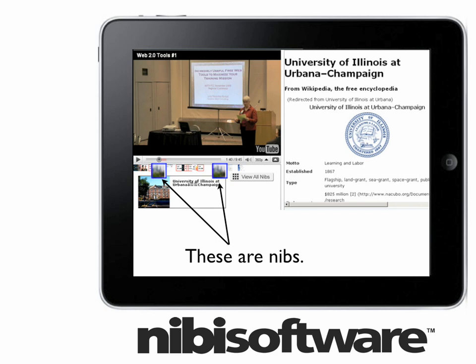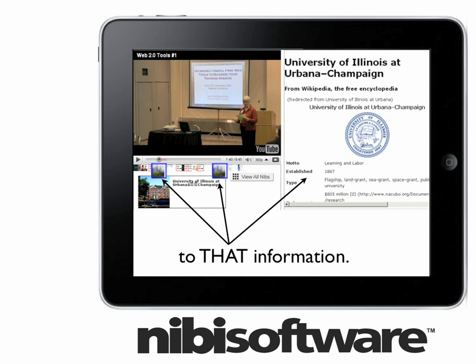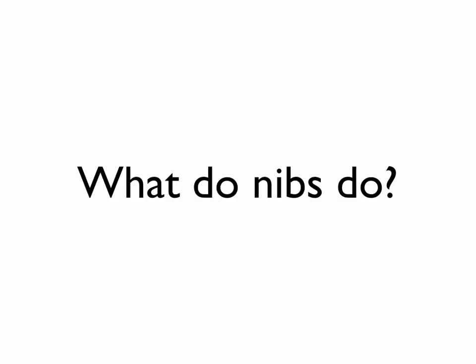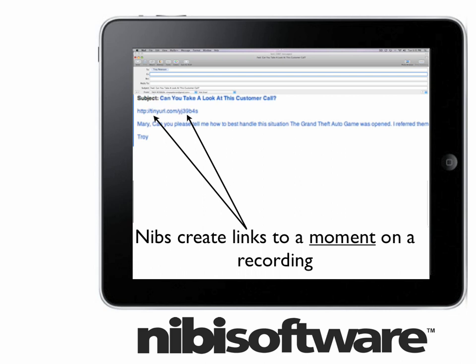A nib is a picture link or a comment saved on a recorded timeline. Nibs let employees or managers connect specific moments of audio or video to written text or comments. Nibs create links to a specific point on the recording that can be searched, shared in an email, or bookmarked.